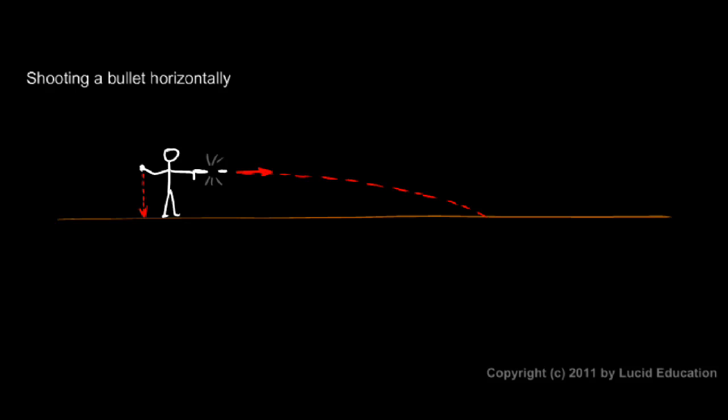And if there were no aerodynamic effects on the bullet and if the ground were perfectly flat, then the bullet fired from the gun would hit the ground at the same time as the bullet that's dropped. And that is because the horizontal motion, even though it's really really fast, the horizontal motion is completely independent of the vertical motion.